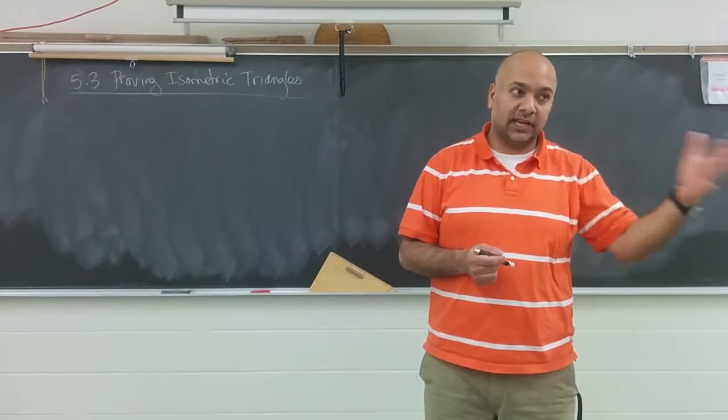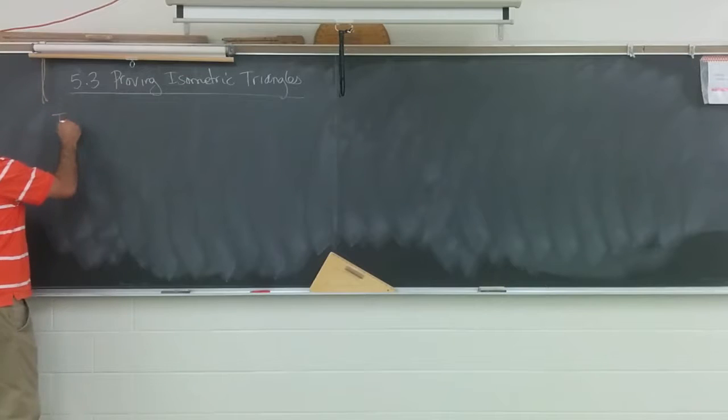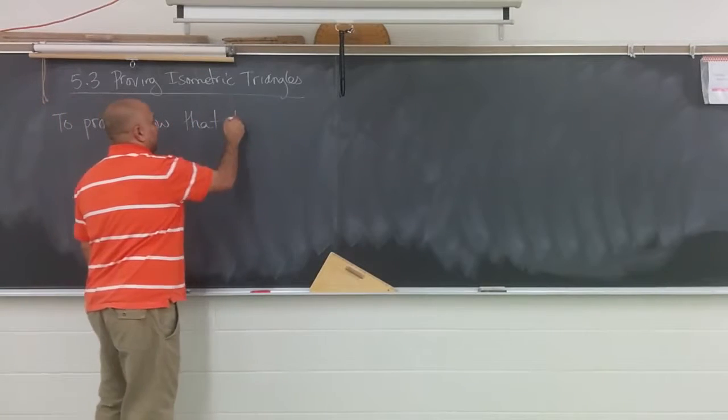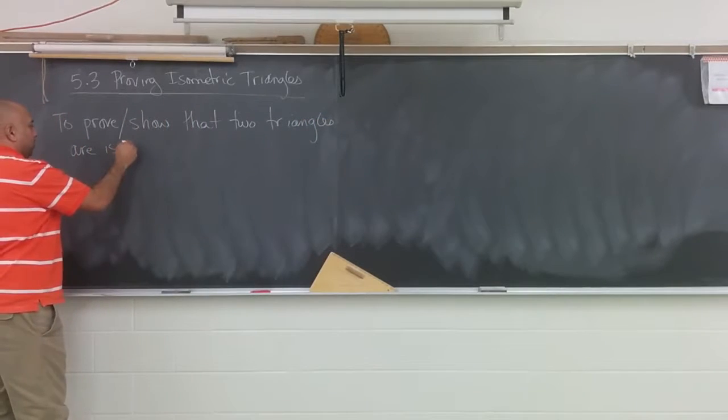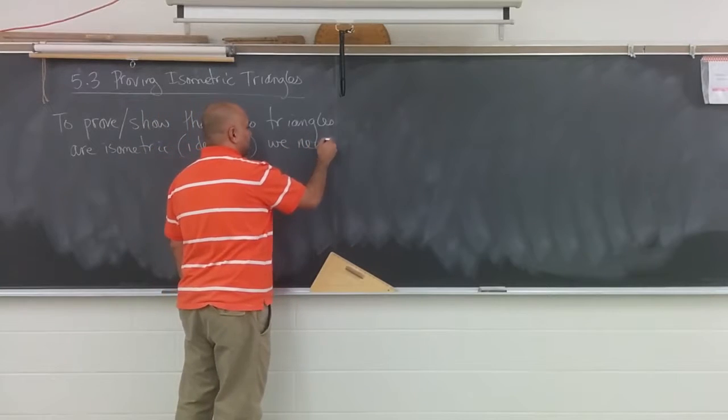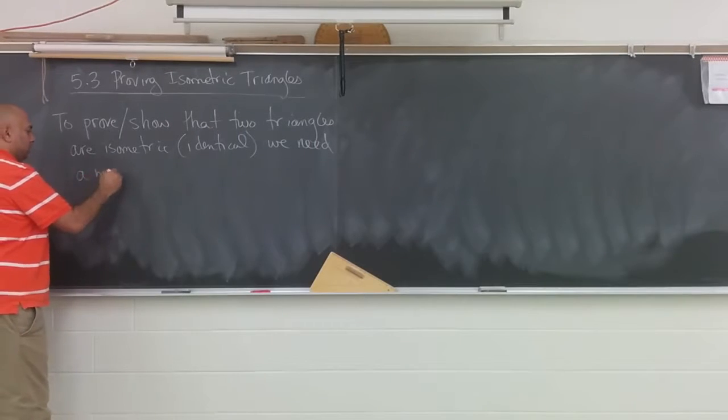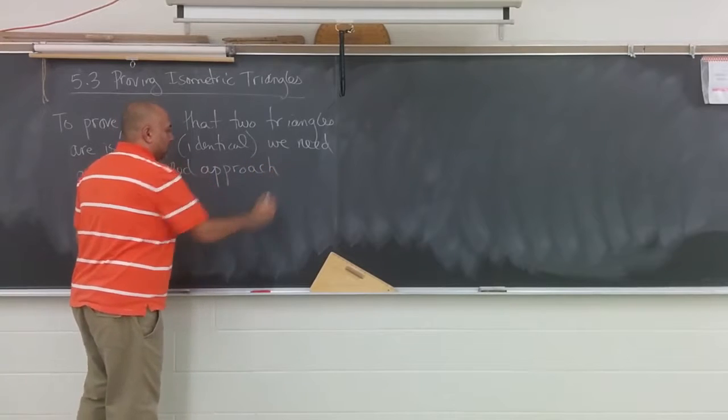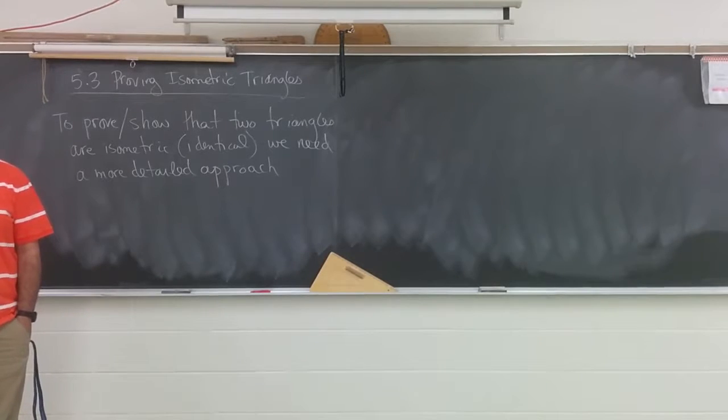When we talk about our proofs here, we're going to use SSS, SAS, ASA, the three that we talked about yesterday, but in a much more explanatory way. To prove, or show, that two triangles are isometric—in brackets, in case we can't remember, that means identical—we need a more detailed approach. What I mean by that is, it's one thing to say yes or no if it is, but that's not really proving it. Proving it means you have to give the entire explanation as to why.